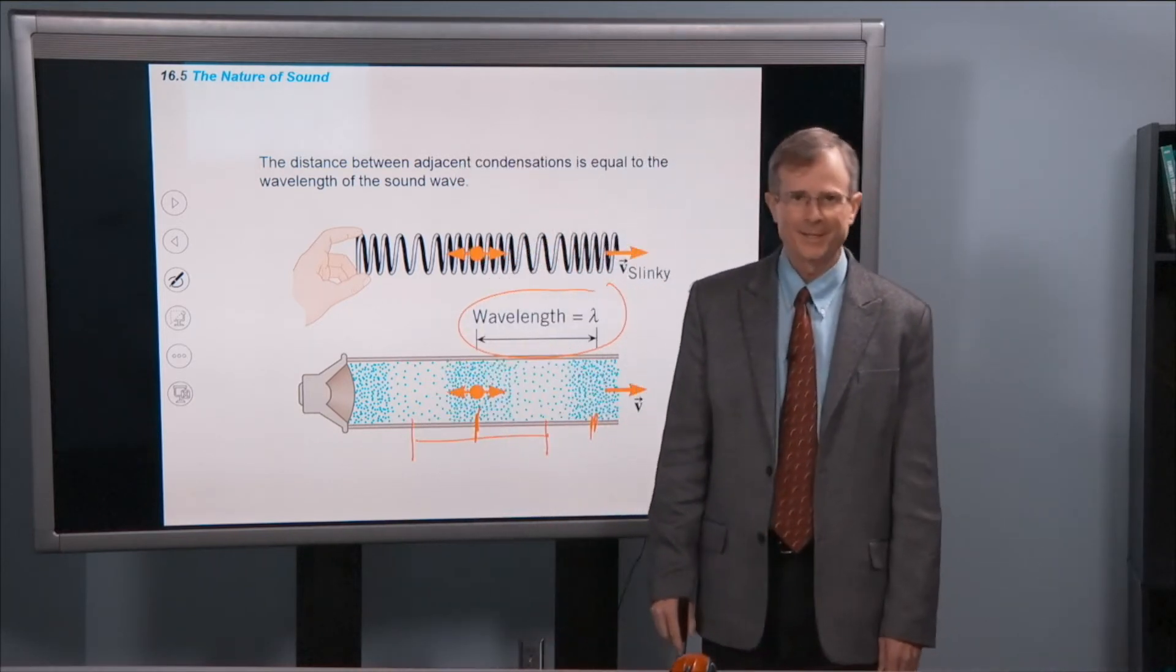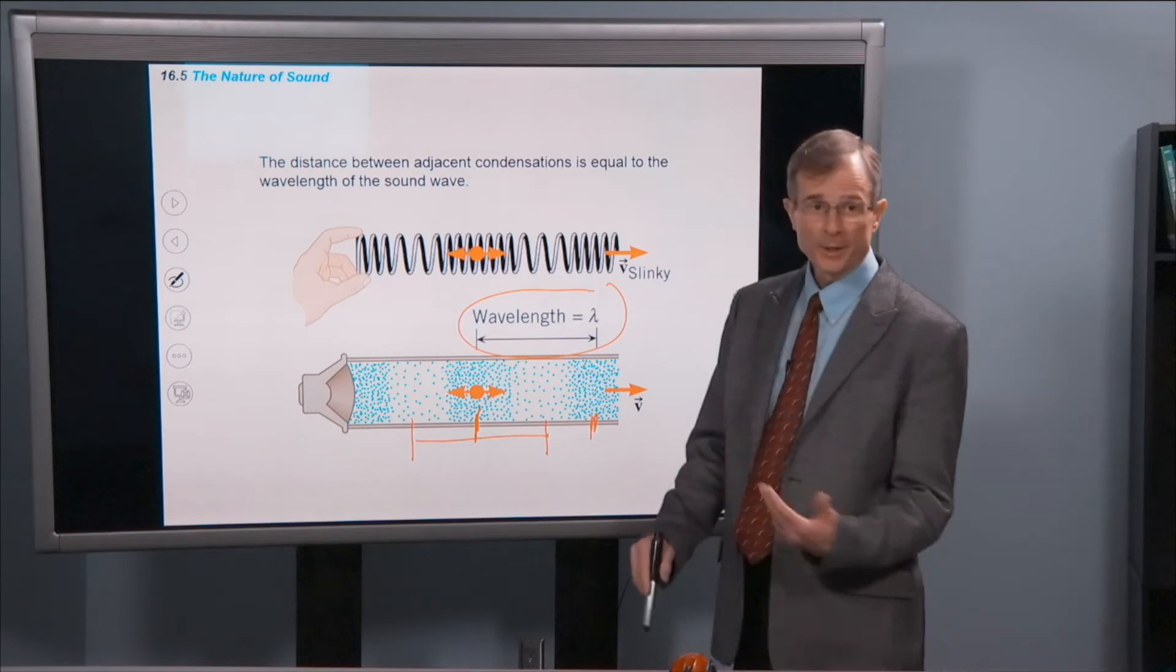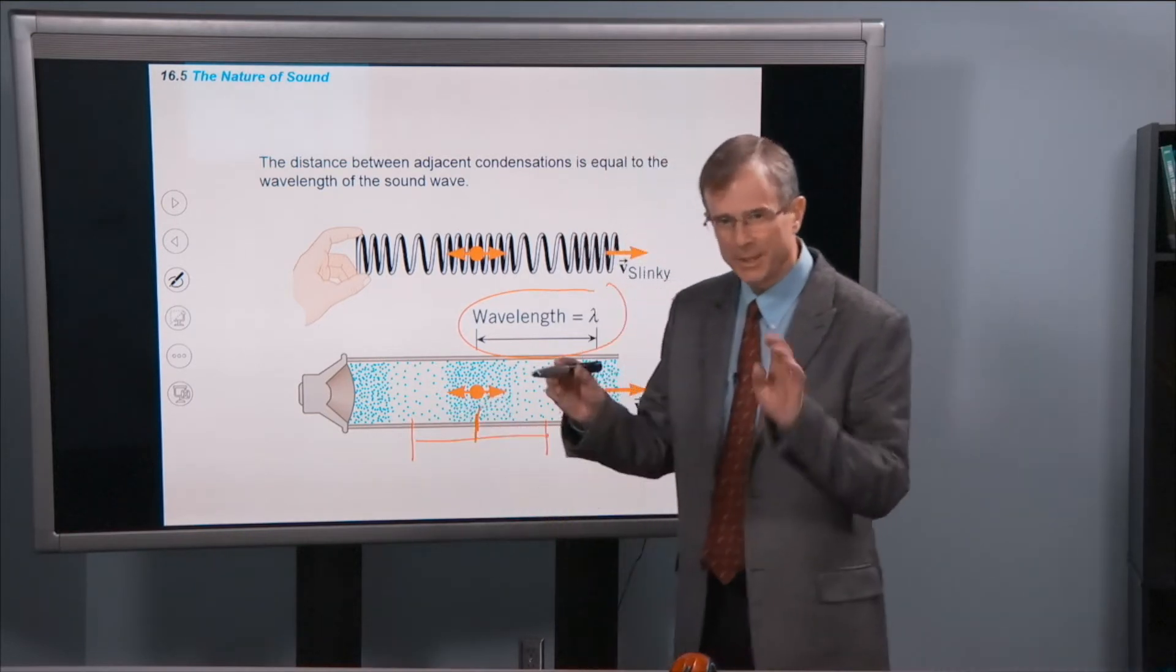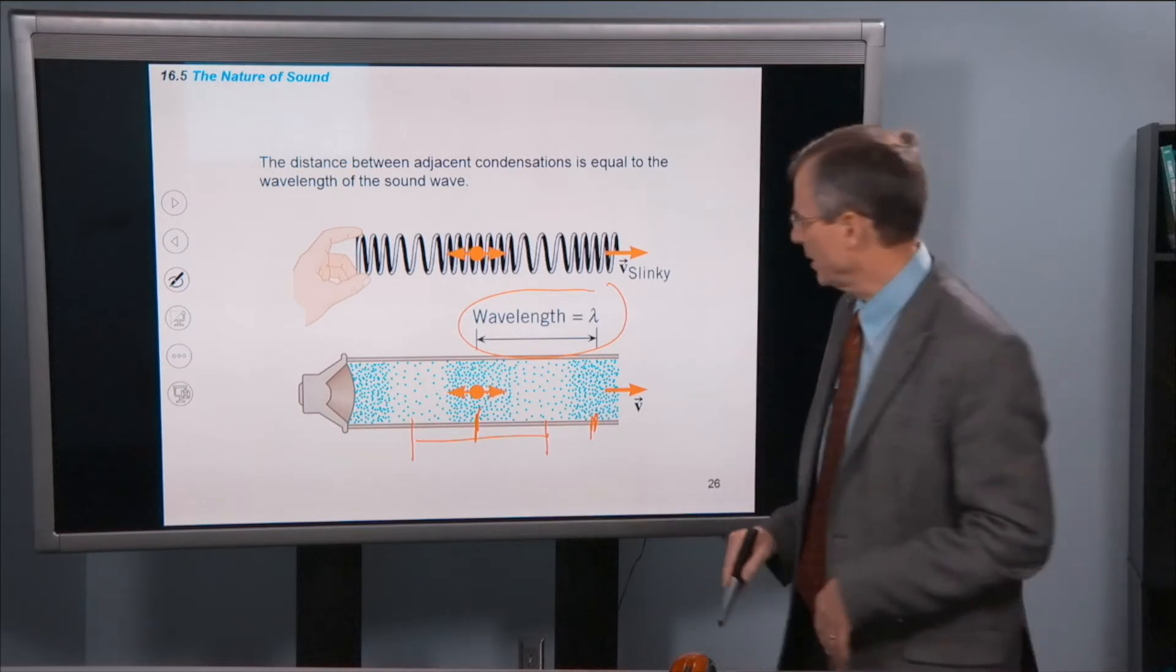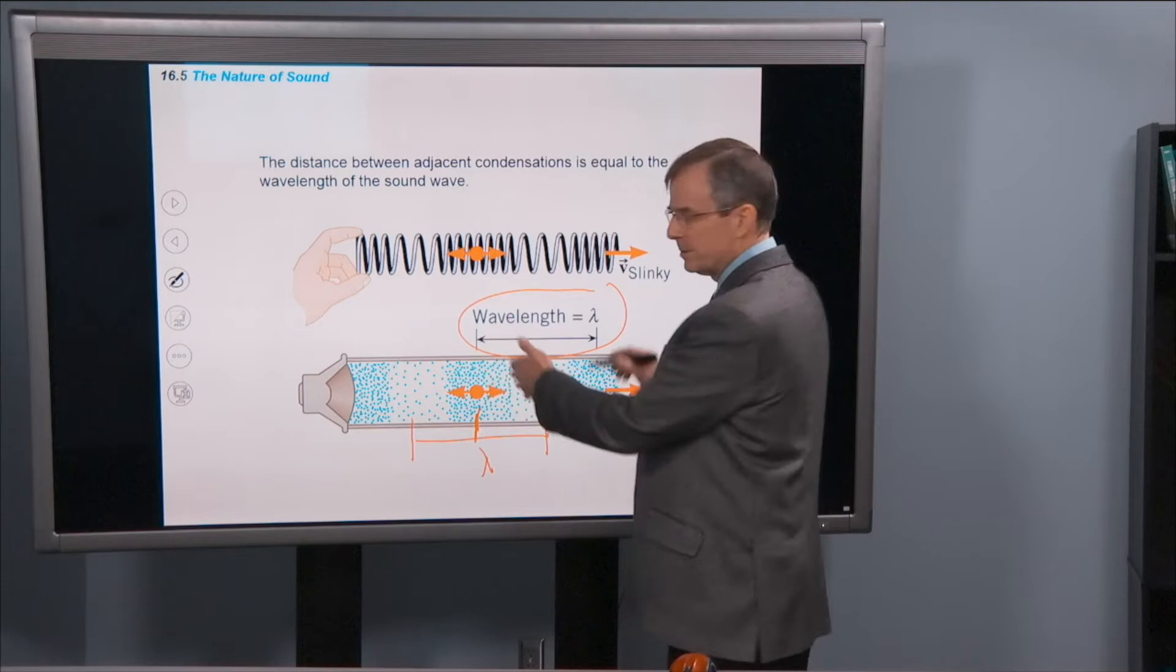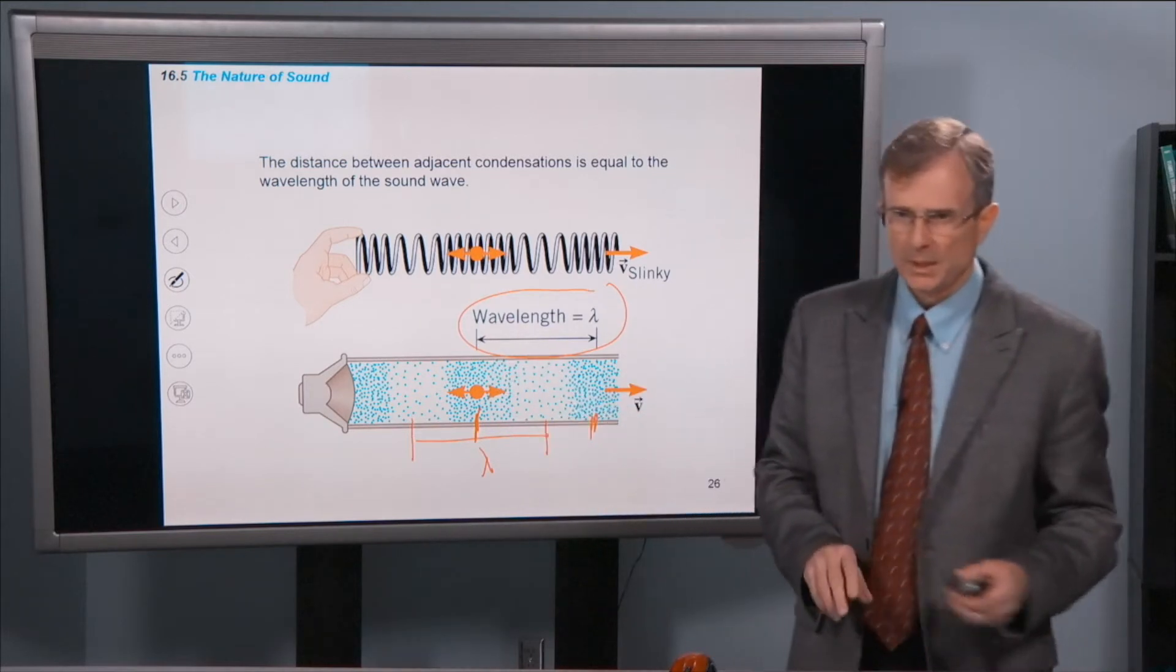And I say, you are so smart. Or it could be the distance between the boundary between rarefactions. You get the idea. You can measure the wavelength in a lot of different ways. But the easiest way for me to think about it is just in terms of the distance between two condensations.